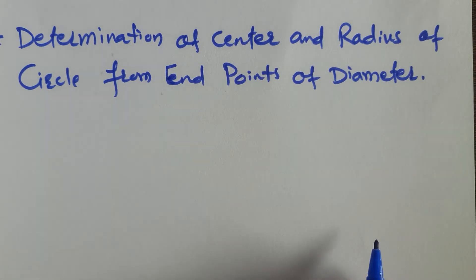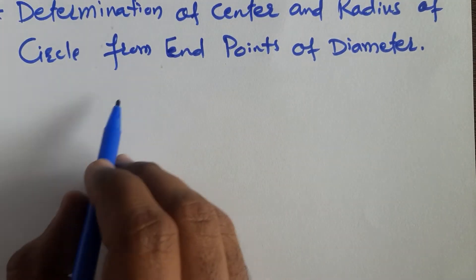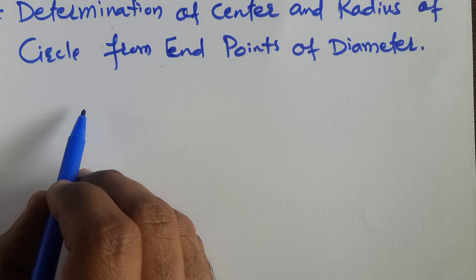Hello everyone. So in this video we will see how to find determination of center and radius of circle from end points of diameter. So if suppose end points of diameter is given, then how to find the center and radius of the circle.